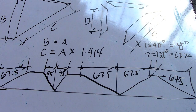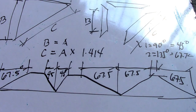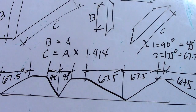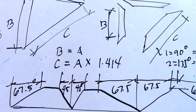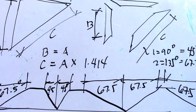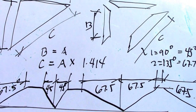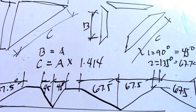So 180 degrees minus 135 degrees equals 45 degrees of cut and 67.5 degrees of cut. This is how to make an angle iron bracket. Thanks for watching, guys, and have a nice day!